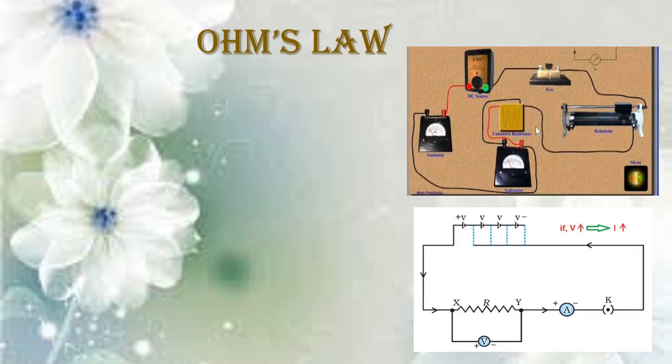With one cell, note down what is the voltmeter reading and the ammeter reading. Now connect two cells and do the same thing — note down the voltmeter reading and ammeter reading, again for three and then for four. So you connect individually one, two, three, and four cells and note down the voltmeter and ammeter readings each time.